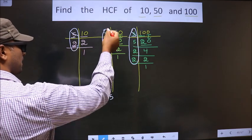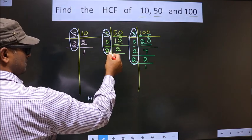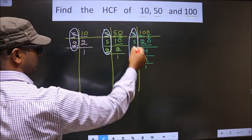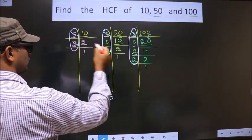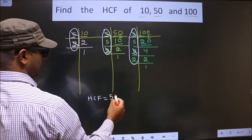Next number is 2. Do we have 2 here? Yes. So go to the next place. Do we have 2 here? Yes. So you cut 2 and write it here.